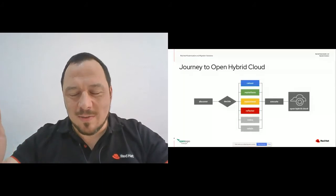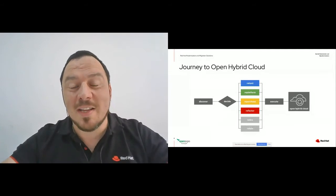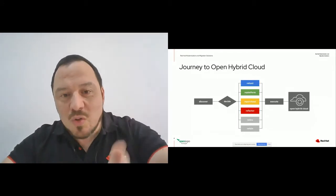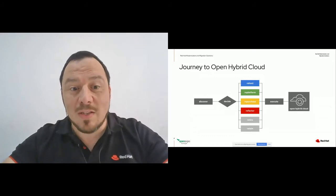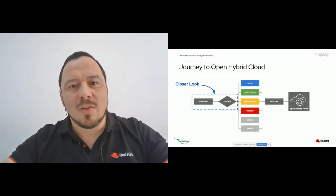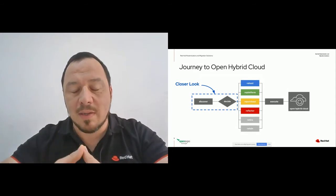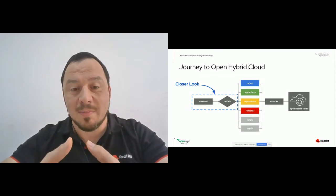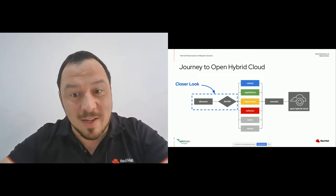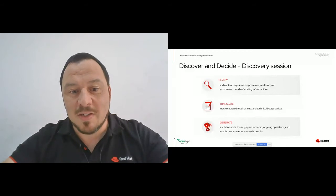What is the journey to hybrid cloud? This is the framework that Amazon Web Services made famous — the 6 R's: Rehost, Repurchase, Refactor, Retire, Retain — in which you decide what you're going to do with your workloads. Before doing that you have to make a decision on which one of those you want to do, and before that you have to do a discovery. So first: discover and decide. Customers need to understand what they have in their environment, and translate those requirements into actions using technical best practices, generating a plan to set up and move to new platforms.